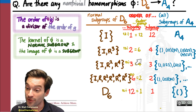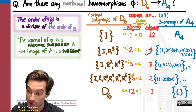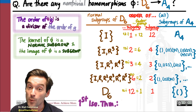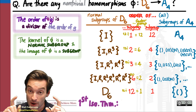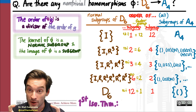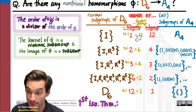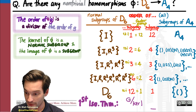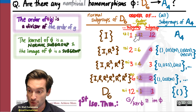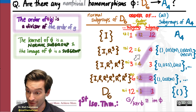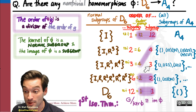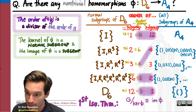Now I have a list of all possible orders for factor groups of D6 by its normal subgroups, and a list of all orders of subgroups of A4 which might be images. The First Isomorphism Theorem says any homomorphism induces an isomorphism between factor group and image, so their orders must match. This rules out two cases: the normal subgroup ⟨r³⟩ whose factor group has order 6 has no order-6 companion in A4, and the order-3 subgroup of A4 cannot be an image since there's no order-3 factor group of D6.